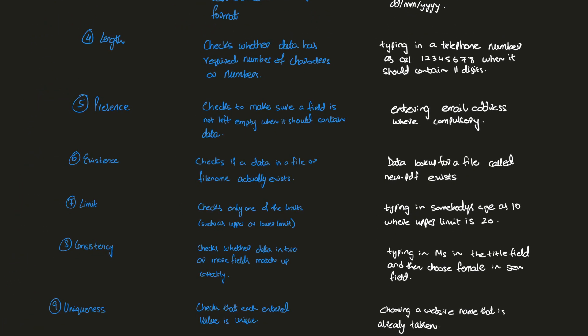Next we have existence check. These two may sound the same but there is a difference. Existence check verifies whether data in a file or a file name actually exists. For example, when looking for a file called 'new.pdf' on your computer — if it exists, it passes the existence check; if it does not exist, it fails the existence check.